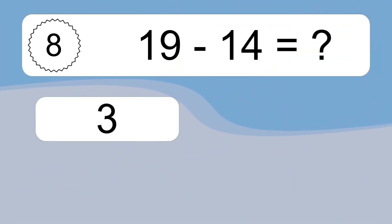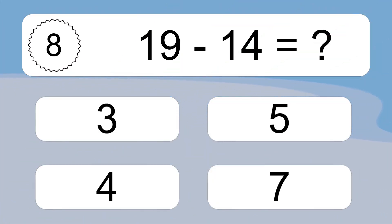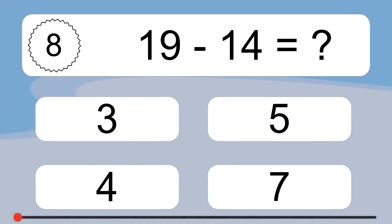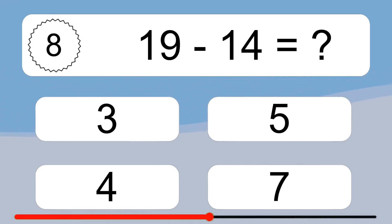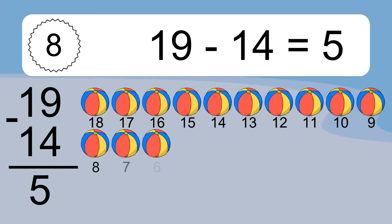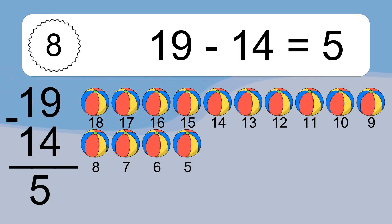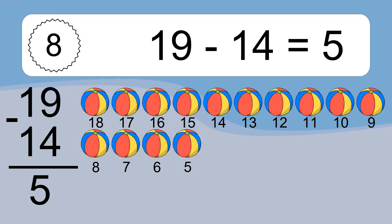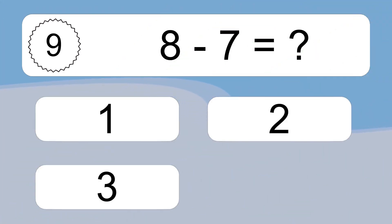19 minus 14 equals what? 19 minus 14 equals 5. Let's count it: 18, 17, 16, 15, 14.